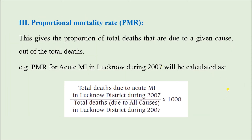The next one is the Proportional Mortality Rate, where we try to find out: out of all deaths occurring in a given community in a given year, how many deaths are occurring due to a particular reason. This gives the proportion of total deaths due to a given cause. For example, the proportional mortality rate for acute myocardial infarction in Lucknow during 2007 is calculated as total number of deaths due to acute MI in Lucknow during 2007, divided by total deaths due to all causes in Lucknow during 2007, multiplied by 1000.